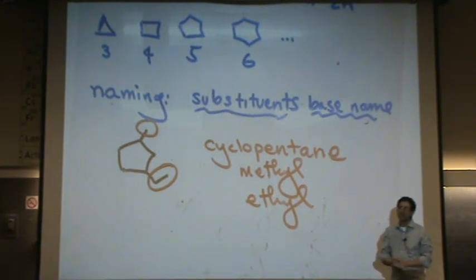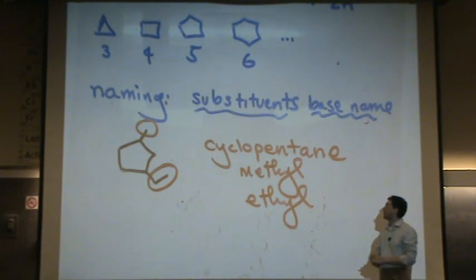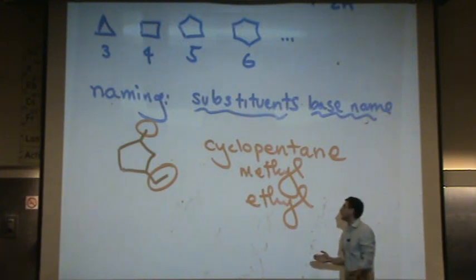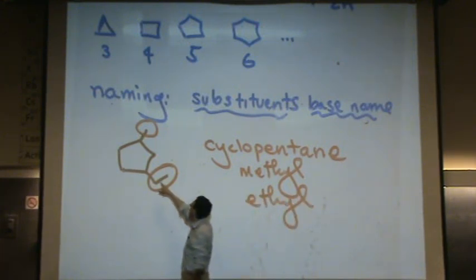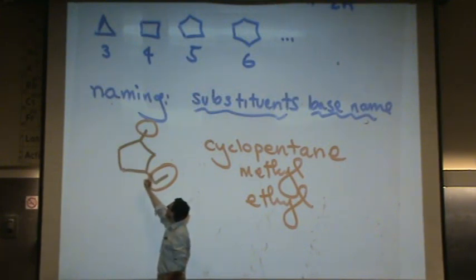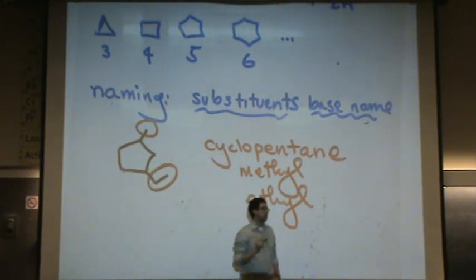Let's do it on the ethyl, because the ethyl is going to be named first. If I put the one on the ethyl, what do I want the methyl to be? Three. As opposed to four. If you go counterclockwise, starting one here, you'll have a one, three. Versus if you went clockwise, it'd be a one, four.